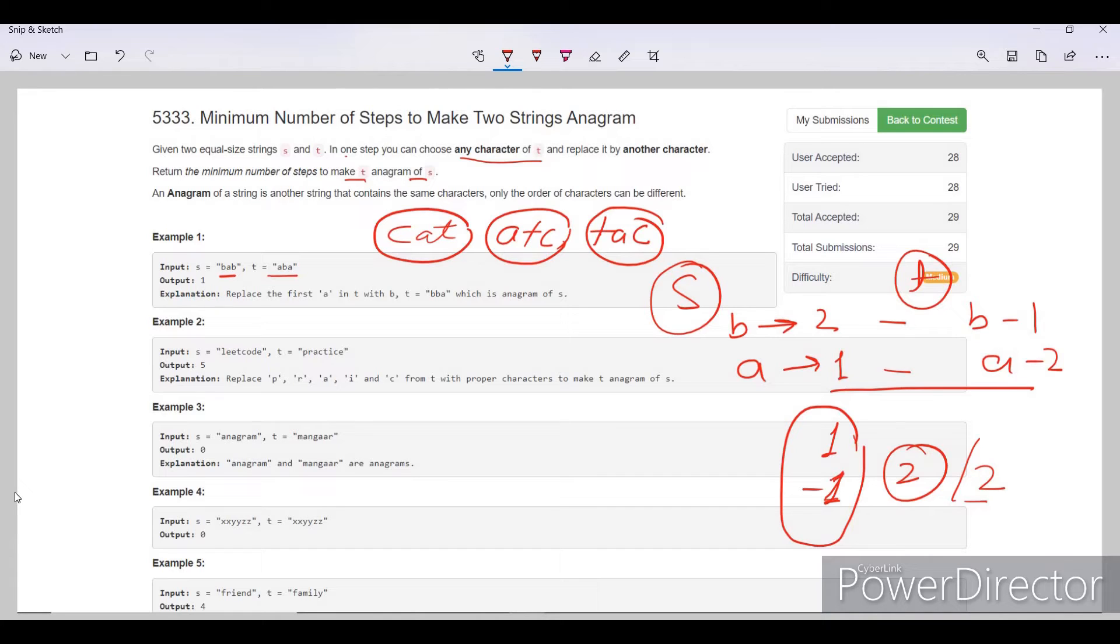Here we have leetcode in S. So number of L equals 1, number of E equals 3, number of T equals 1, number of C is 1, number of O is 1, and number of D is also 1.